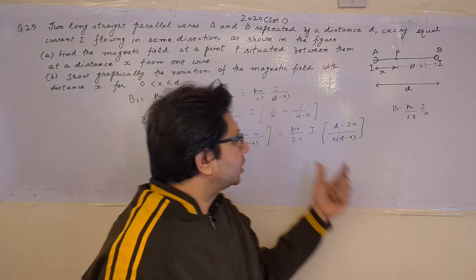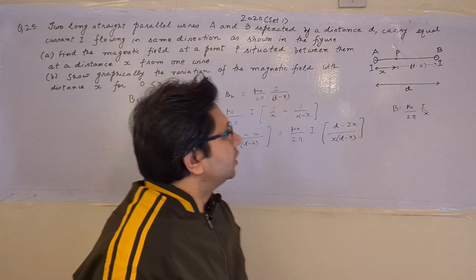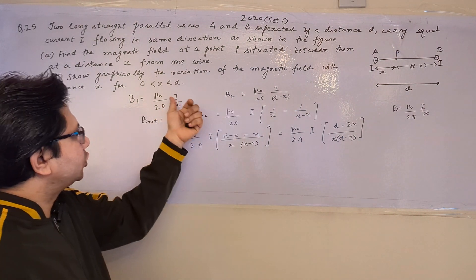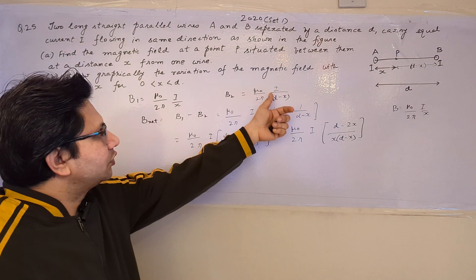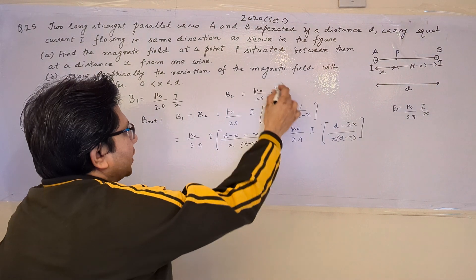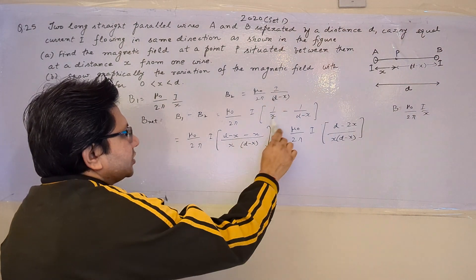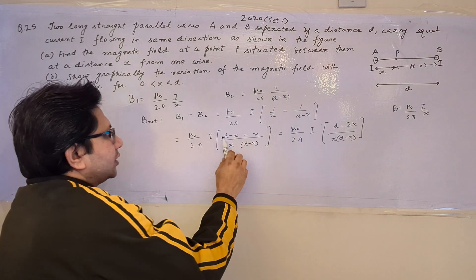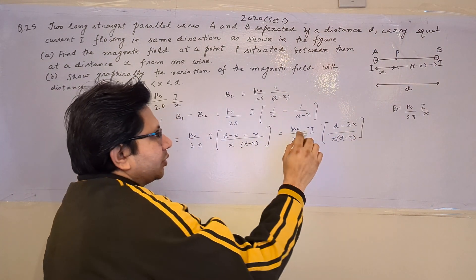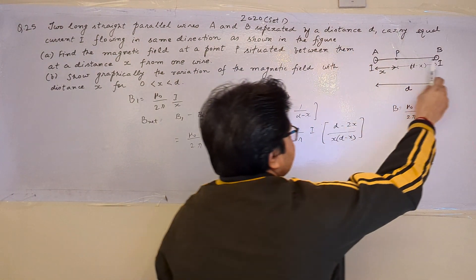Since the magnetic field directions from both wires are different, we take the vector sum, giving a net field B_net = B1 − B2. Here B1 = μ₀/2π × i/x and B2 = μ₀/2π × i/(d−x). Taking μ₀/2π × i as common and combining the bracket as (1/x − 1/(d−x)) with LCM x(d−x), the numerator becomes d minus 2x. So the formula for the magnetic field at point P, which is distance x from wire A and d−x from wire B, is B_net = μ₀/2π × i(d−2x) / [x(d−x)].